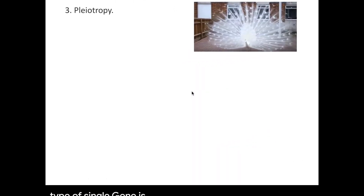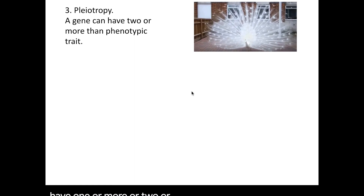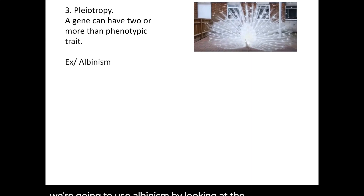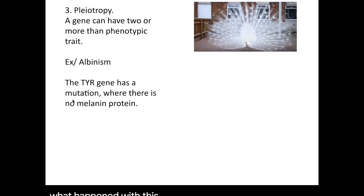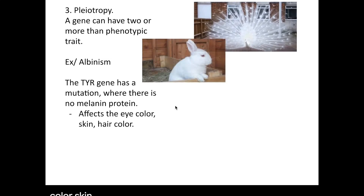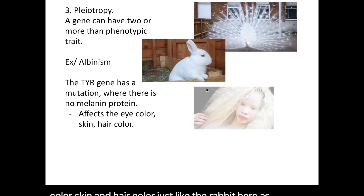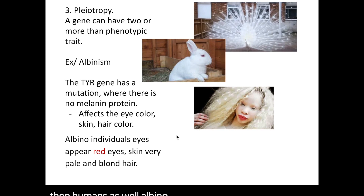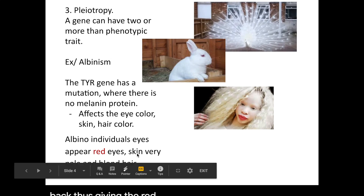The third type is pleiotropy, which means one gene can have two or more phenotypic effects. We'll use albinism as an example — this albino peacock is white in more ways than one. In individuals with albinism, the TYR gene has a mutation where no melanin is produced, affecting eye color, skin color, and hair color, as seen in this rabbit and in humans as well. Albino individuals' eyes appear red because they have no pigment, so red light is reflected back. The skin is very pale and translucent, and hair is blonde.